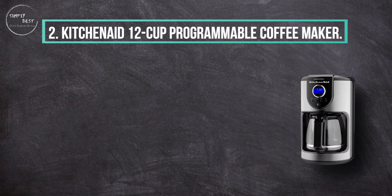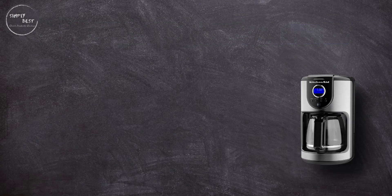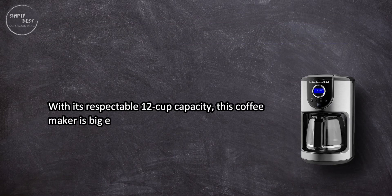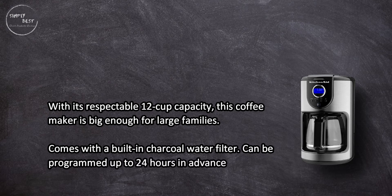At number 2: KitchenAid 12 Cup Programmable Coffee Maker. With its respectable 12 cup capacity, this coffee maker is big enough for large families. Comes with a built-in charcoal water filter and can be programmed up to 24 hours in advance.